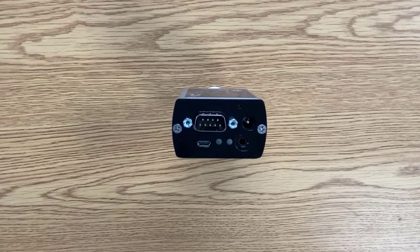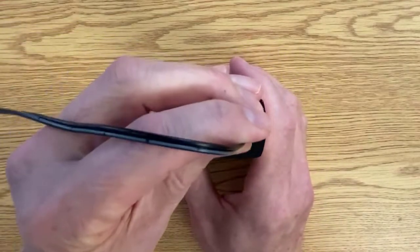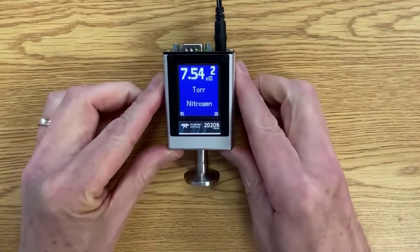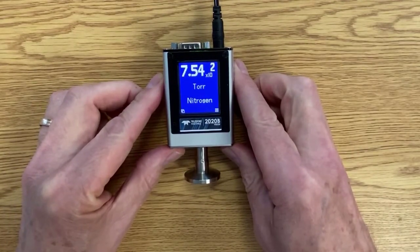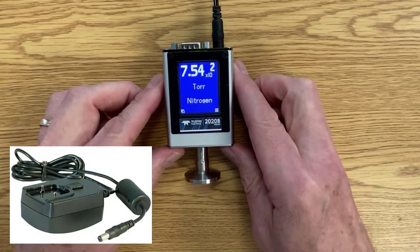Now, let's get the HVG-2020B powered up. The easiest way to get started is to simply use the 24-volt bayonet jack. Plug in here. And when we plug in, we instantly get an accurate reading at atmospheric pressure. You can get the power supply from us or buy your own.